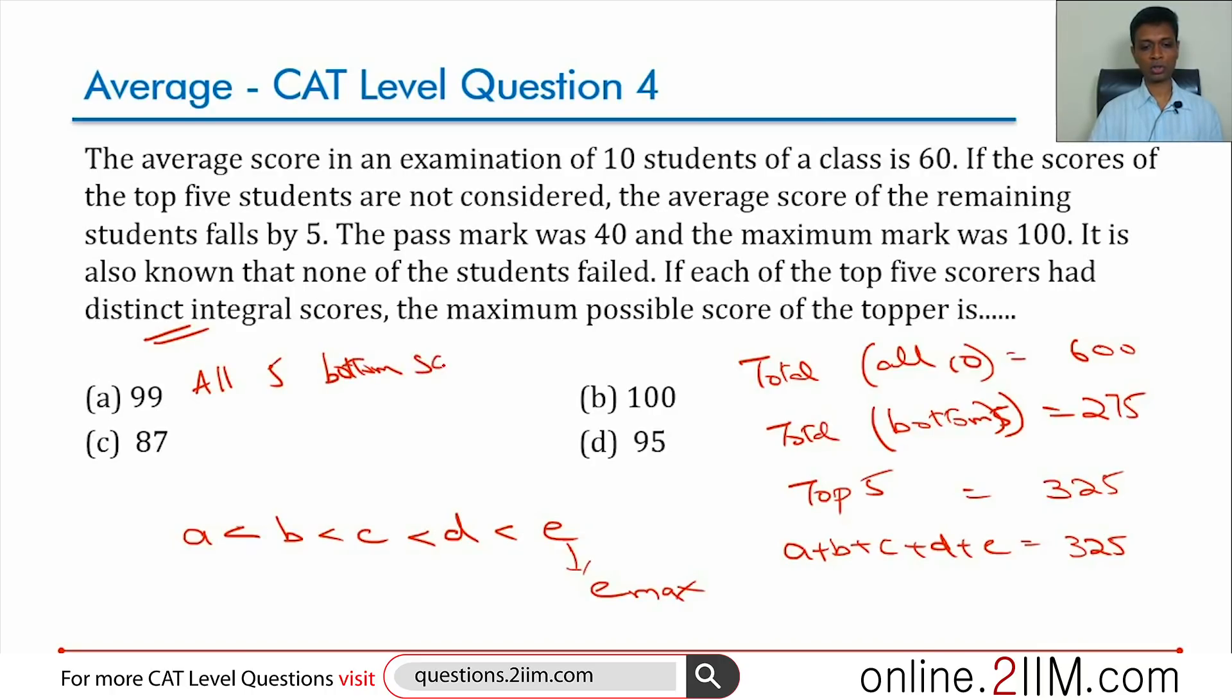So all five bottom scores equal to 55. Now this is possible. Remember that all of the top five scores have to be distinct, they're not telling us that all scores are distinct. Keep that in mind. So the bottom five can all be the same, they can all be 55. If they were all 55, then the least of the top five could also be 55, and then we go step by step from there.